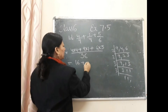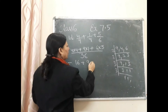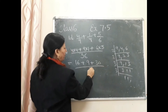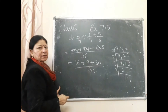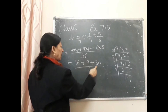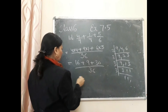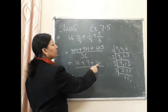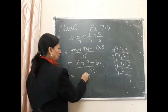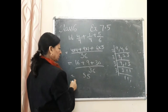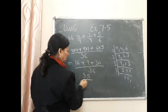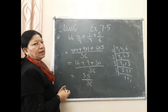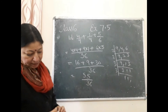तो अब numerator में: 4×4 = 16, plus 9×1 = 9, plus 6×5 = 30, upon 36. जोड़ते हैं: 6+9+0 = 15 (carry 1), 1+3+1 = 5 → answer: 55/36. यह आपका answer है।